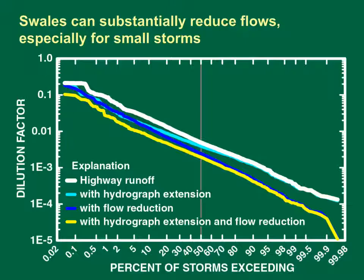The vertical axis is the dilution factor on a logarithmic scale ranging over five orders of magnitude. The horizontal axis is a probability scale indicating the percentage of storms with dilution factors that equal or exceed a given value. The white line shows the dilution factors from highway runoff without BMP treatment. The light blue line represents potential effects of stochastic hydrograph extension values from a swale that may range from 6 minutes to 3 hours. The dark blue line represents the potential effects of stochastic flow reduction by a swale. The yellow line shows the dilution factors that would result if both extension and reductions are modeled. For the modeled swale, based on the medians of best-fit volume reduction and flow extension statistics, volume reduction is the major contributor to the dilution factor reductions at this hypothetical site.